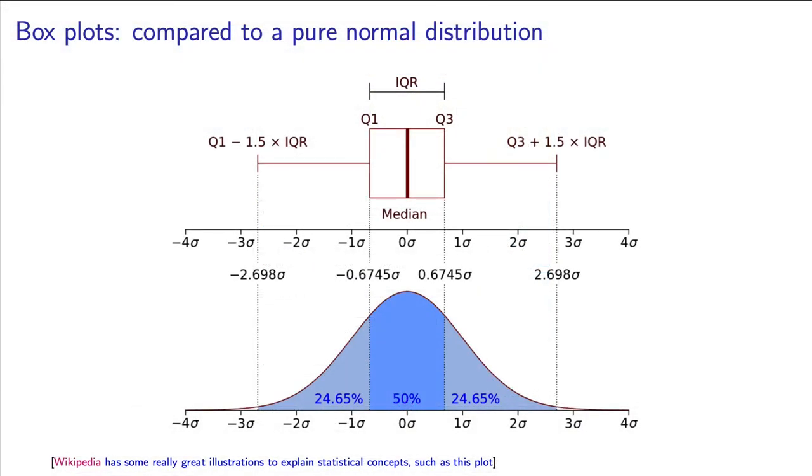A box plot is a way to show these three numbers graphically, as well as that spread. There are two other features shown on a box plot, fences and outliers.